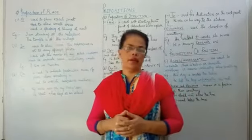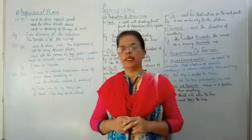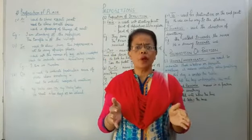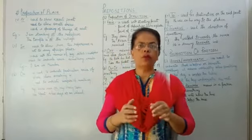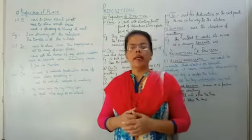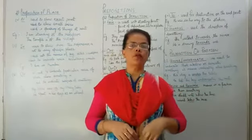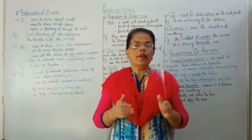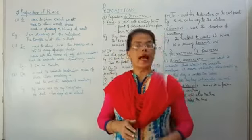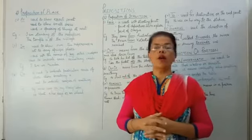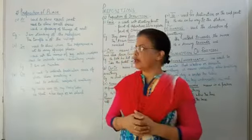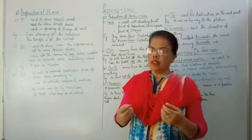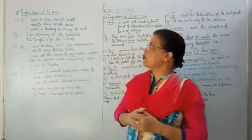Now, if I talk about 'at', it is used for two things. First, it is indicating small places — small cities like towns, villages. For those we use 'at'. Second, it is talking about the exact position of a noun or a pronoun. For example: I am standing at the reception, at the gate. That is the exact place or position of the person or anything.